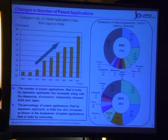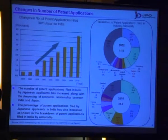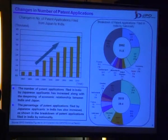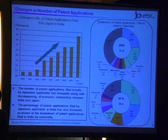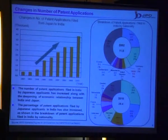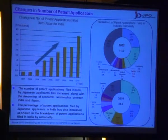I'd like to explain the situation of patent applications filed in India by Japanese applicants. The bar graph on the left shows the changes in number of patent applications filed in India by Japanese applicants. The graph shows that the number of patent applications filed from Japan to India increased along with the deepening of the economic relationship between India and Japan. The five charts on the right show the breakdown of patent applications filed in India by nationality of applicants. These charts indicate that the percentage of patent applications filed in India by Japanese applicants increased from 3% in 2002 to 10% in 2010.